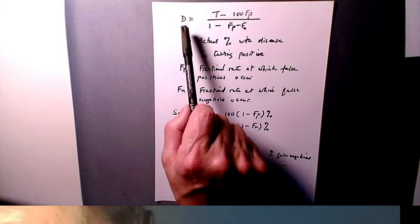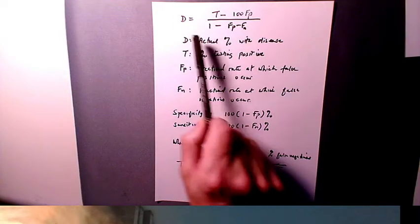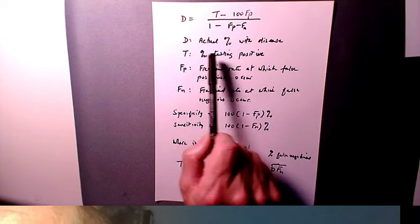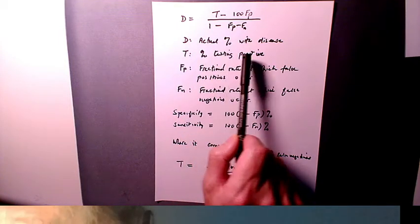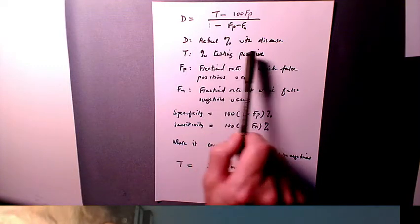The idea here is capital D is the percentage of people who actually have the disease and that's what one would really like to know. Capital T is the percentage of people who test positive on a given day and in general, we will know this.